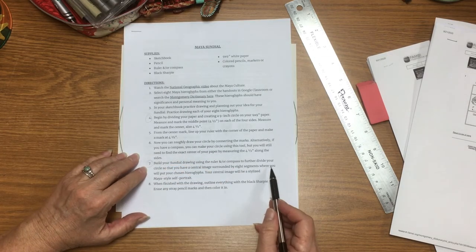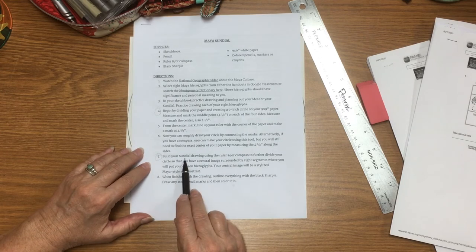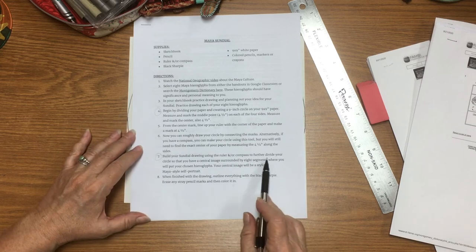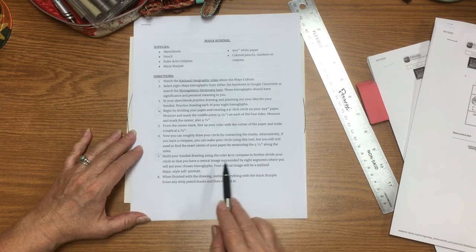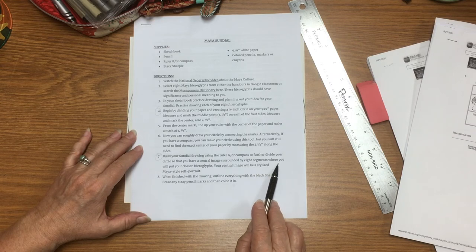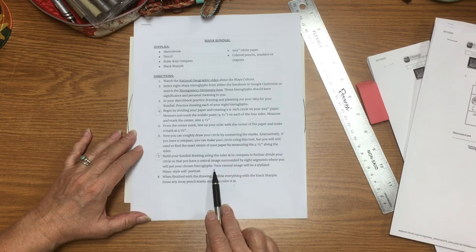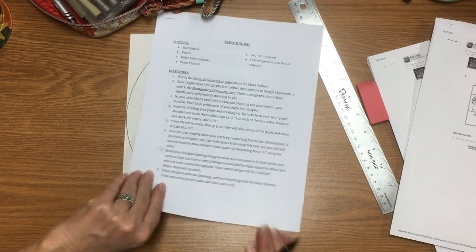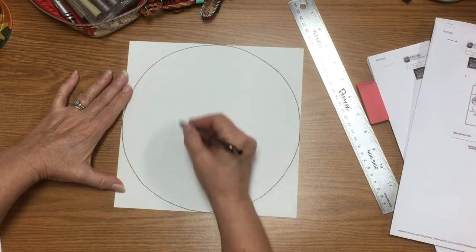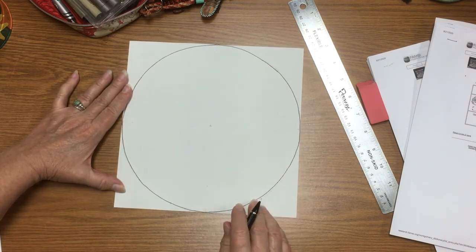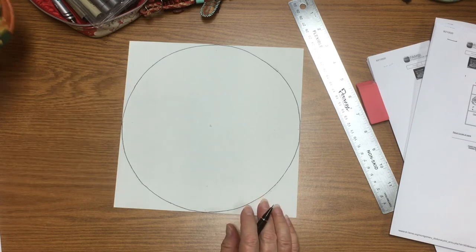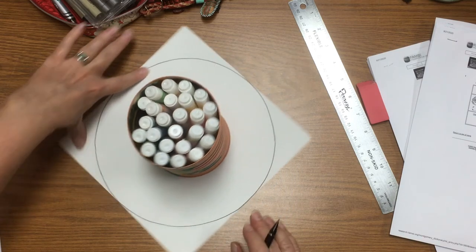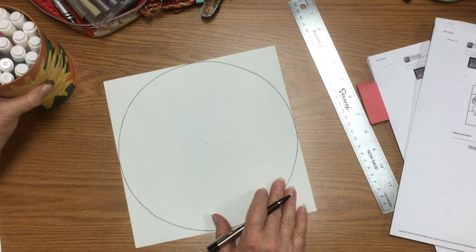Now I'm down to instruction number seven. Build your sundial drawing using the ruler or a compass if you have a compass to further divide your circle so that you have a central image surrounded by eight segments where you will put your chosen hieroglyphs. Your central image will be a stylized Maya self-portrait. So in the middle here is where I want to create my next circle. Again, if you have a can or something circular that you can place in the middle, you want to make sure it's very centered.